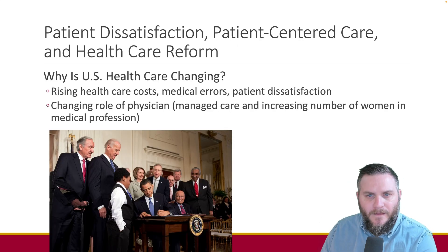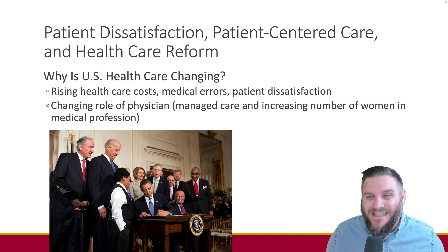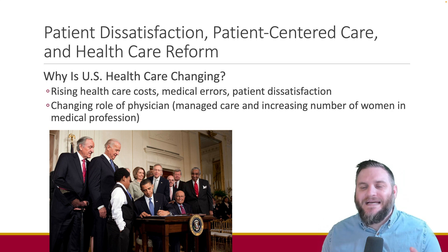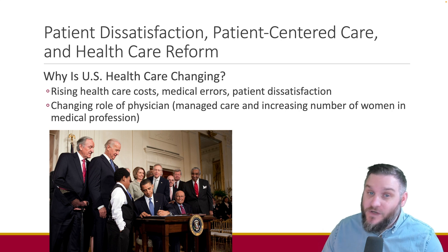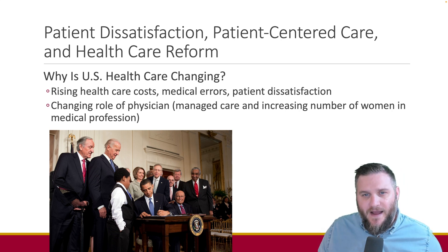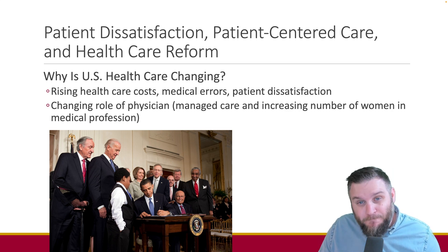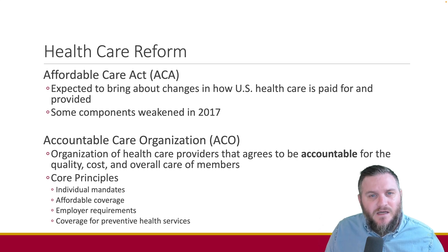Health care delivery systems around the world vary, with models including single-payer, mandated insurance, and fee-for-service programs. In the United States, a pluralistic system combining different designs is in place. Rising costs, medical errors, and patient dissatisfaction are driving health care reform. Patient-centered care and accountable care organizations (ACOs) — a key component of reform under the Affordable Care Act — bring together providers to deliver coordinated, evidence-based care measured through quality metrics.